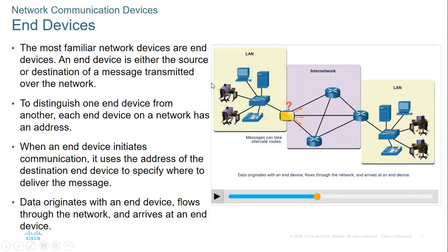We have two types of network devices. The first one is called end devices — these are PCs, servers, and IP phones. The other type is intermediary devices, which include the switch and the router.